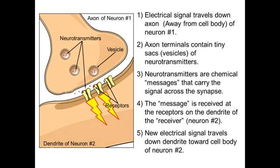Now our electrical signal is created in neuron number two, continuing down through the dendrite of neuron number two, back into the cell body, then down the axon of the second neuron, and continues on that way. This is how messages are carried through your brain — our thoughts and memories are nothing more than a sequence of electrical and chemical signals interacting in different ways.